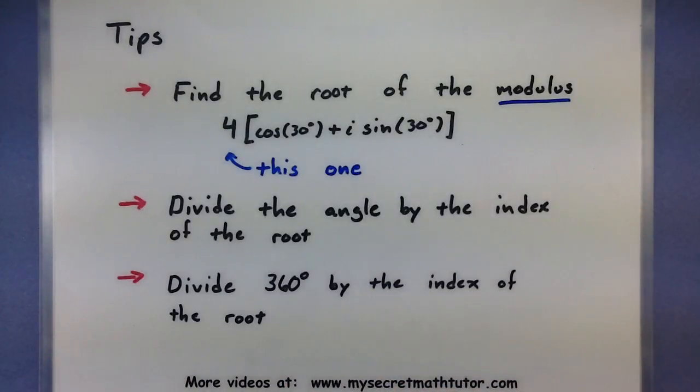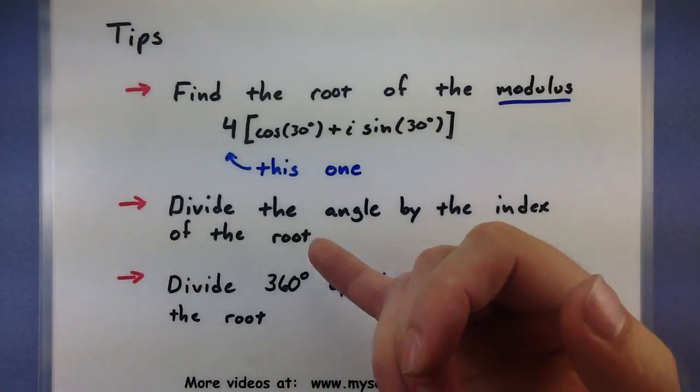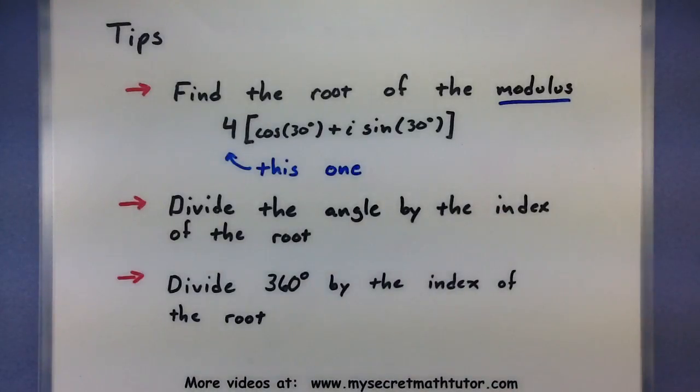Lastly, we'll pick up all of the roots that we need by taking 360 and dividing it by the index of that root, and then continually adding it to the angle we got here. Once we get all of these three things, we'll be able to build all of the roots we need. Let's give it a try with an example problem.